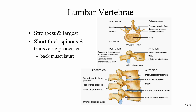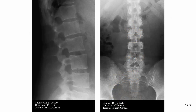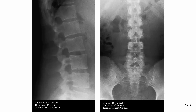Let's take a look at an x-ray of a lumbar. We have our lateral view, which is good for seeing the intervertebral foramen and also for checking out disc height. Then we have our AP view, and with the AP, we're looking for what's called a winking owl.